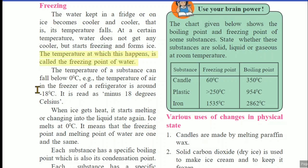The temperature of a substance can fall below 0 degrees Celsius. For example, the temperature of air in the freezer of a refrigerator is around minus 18 degrees Celsius. Now observe — what happens in the freezer? Ice is formed. If you fill a container with water and keep it in the regular refrigerator section, will it form ice? No. Until you keep it in the freezer, conversion into ice will not happen. Why? Because the freezer has a different temperature compared to the regular cooling section of the refrigerator.